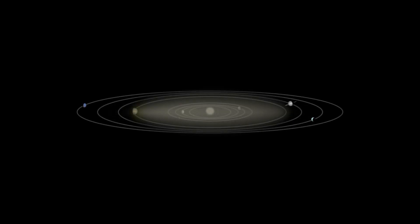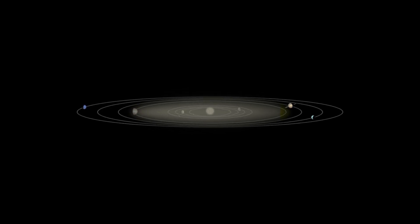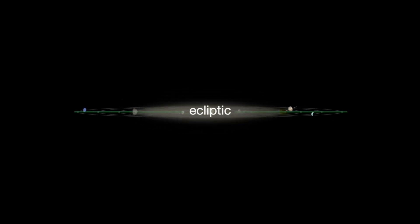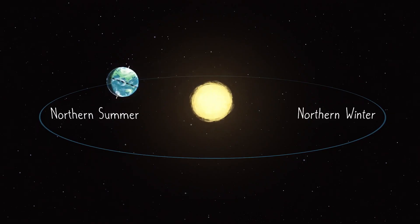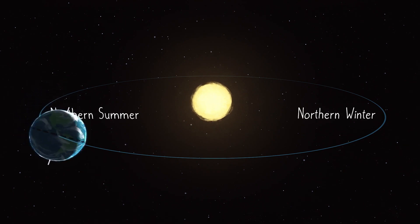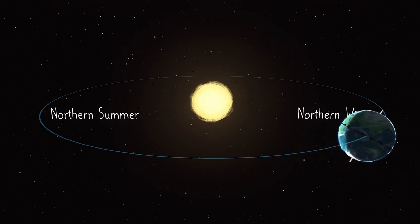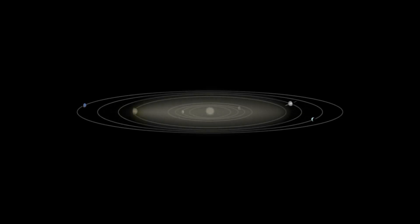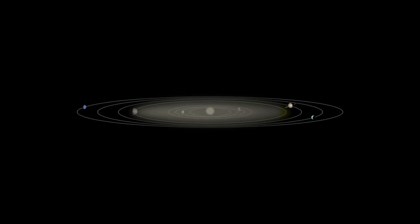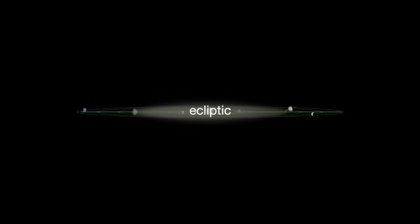First, let's start with the ecliptic plane. The ecliptic plane is the imaginary plane that extends from the Earth's orbit around the Sun. As the Earth orbits the Sun, it traces out a path in space, creating the ecliptic plane. This plane is essential in understanding the motion of celestial bodies in our solar system.